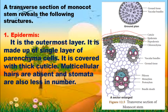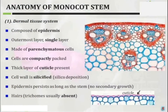Multicellular hairs are absent in the monocot stem. Stomata are present but less in number compared to the dicot stem, where there are more. So in the monocot stem, stomata are fewer. The epidermis is the outermost single layer, made up of parenchyma cells, covered with thick cuticles, with multicellular hairs absent and stomata less in number.